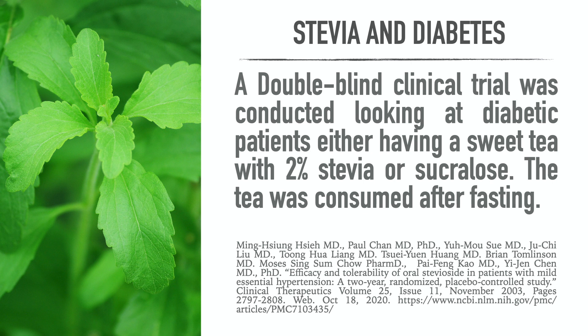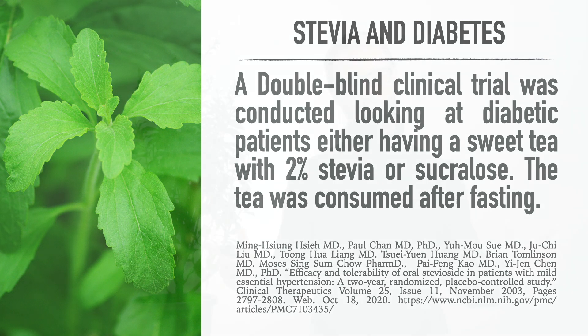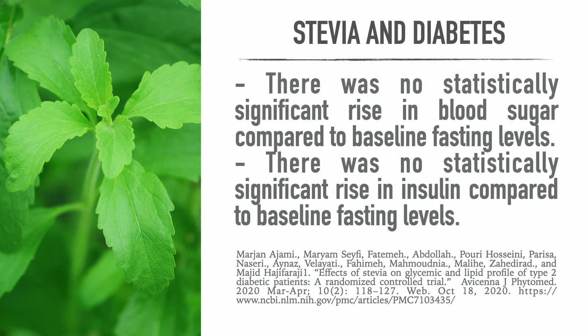Let's look at the research. A double-blind clinical trial was conducted looking at diabetic patients either having a sweet tea with 2% stevia or sucralose and the tea was consumed after fasting. So these people had fasting blood sugar levels. They drank a tea either with this or with sucralose and what was the result?